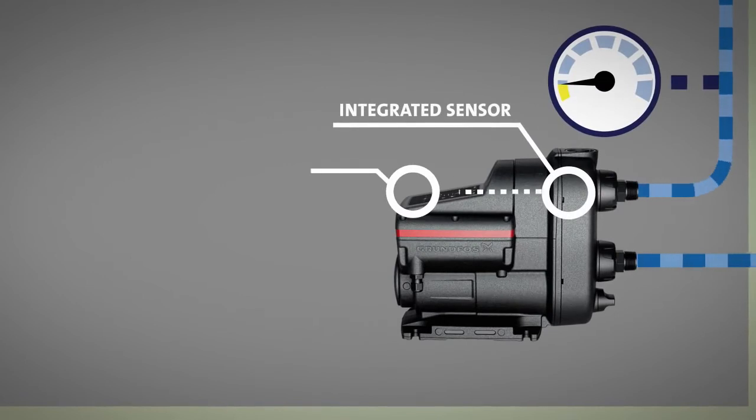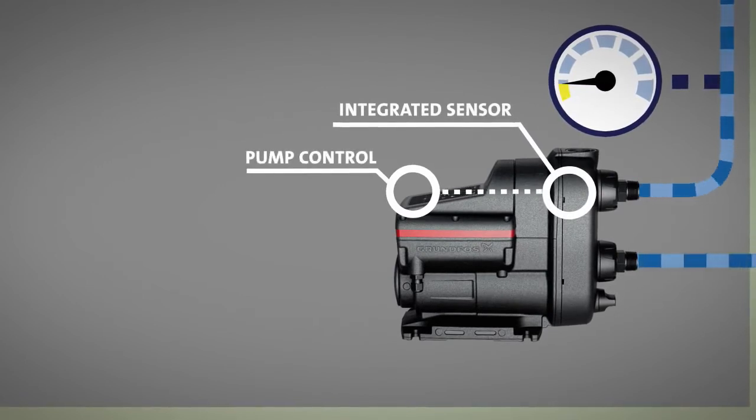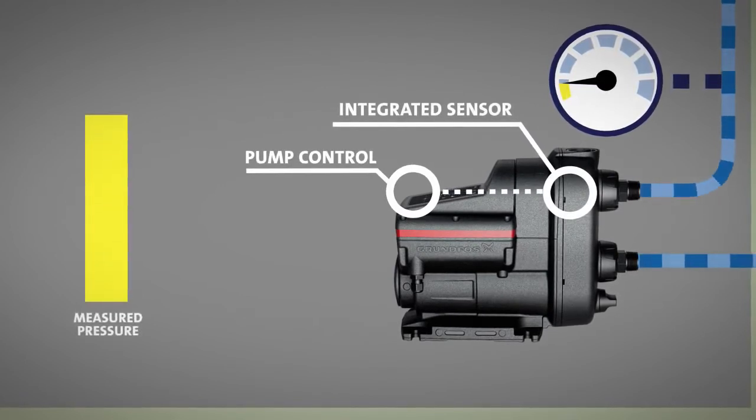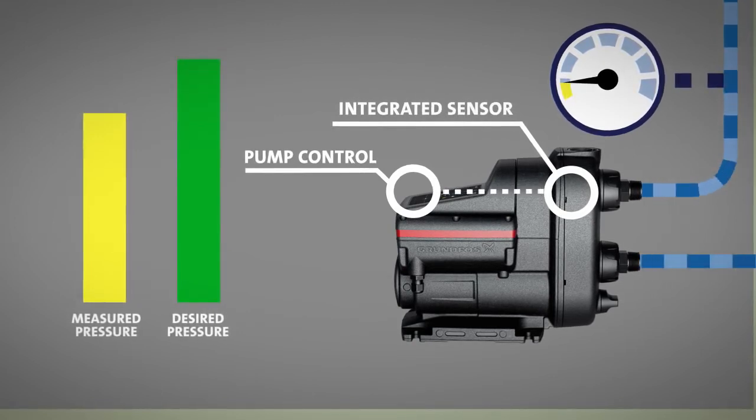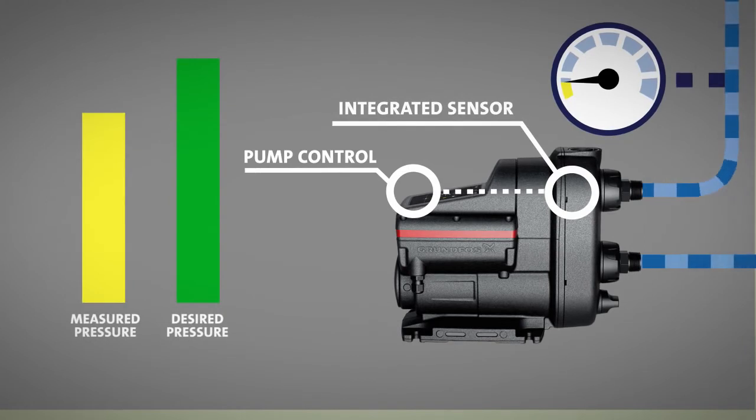The sensor sends a signal to the pump control, which then compares the measured water pressure level with the desired water pressure—that is, the pressure you have set based on the homeowner's needs.